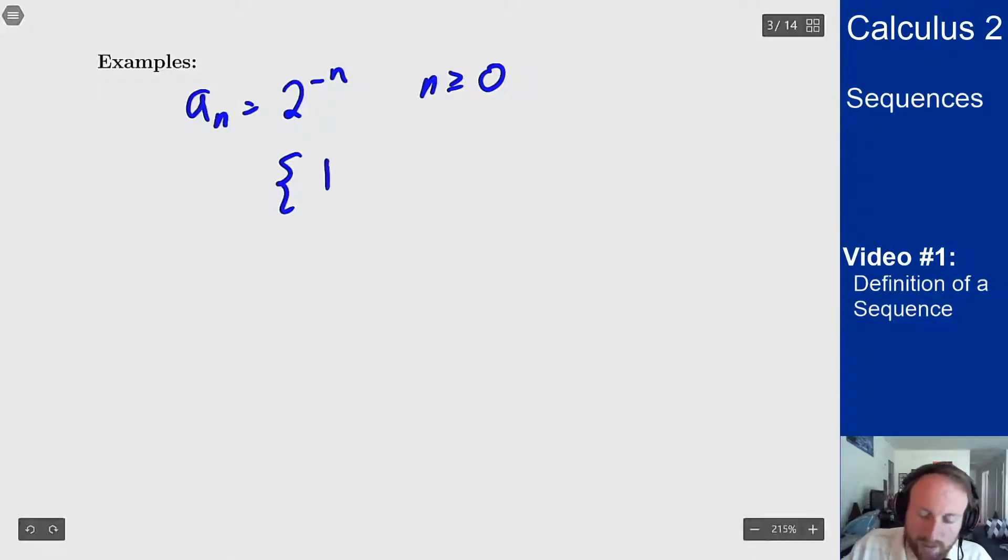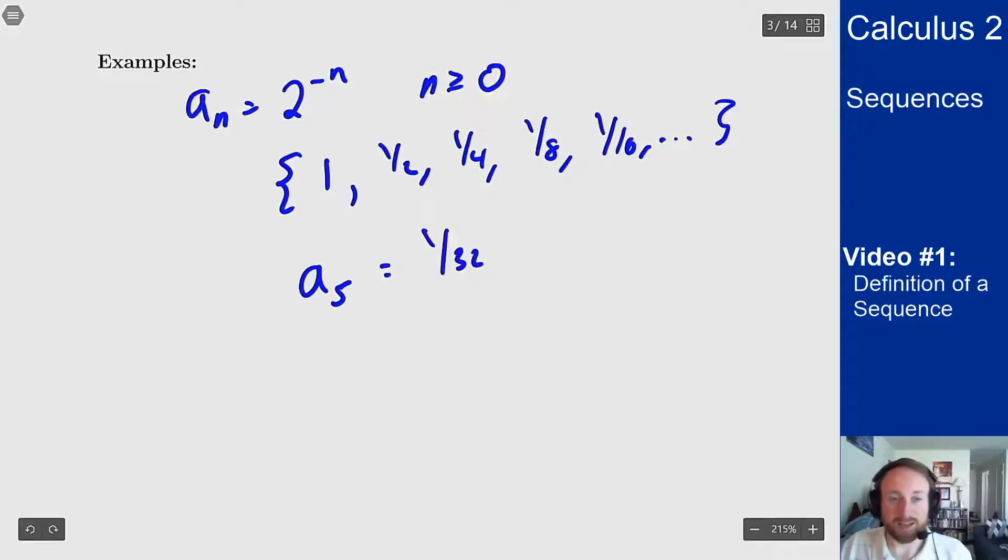If I plug in 1, I get 1 half. Then I get 1 fourth, then 1 eighth, then 1 sixteenth, and so on. And I could then write something like a of 5 is 1 over 32, because that's what 2 to the minus 5 would be, 1 over 32.